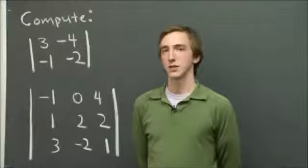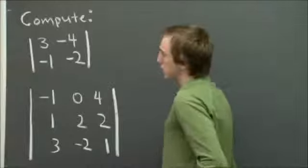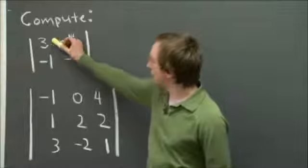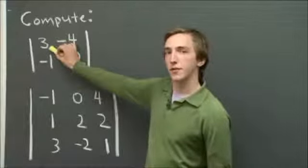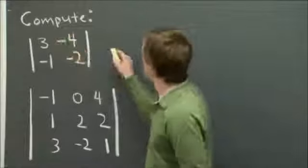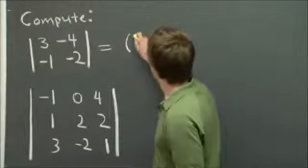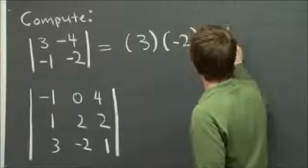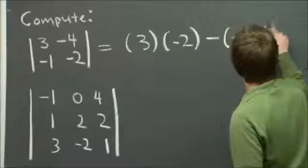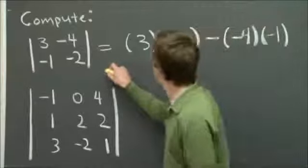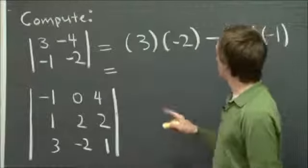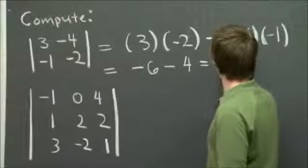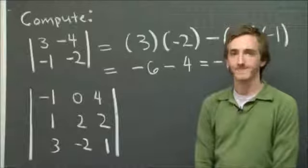Welcome back. So why don't we get started with the 2 by 2 matrix first. Remember, when we compute a 2 by 2 determinant, we multiply the entries in the main diagonal, and we subtract from that the product of the entries in the off diagonal. So in this case, we have 3 times minus 2 minus minus 4 times minus 1. So we have minus 6 minus 4 is minus 10.